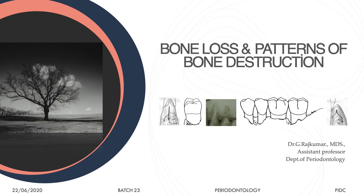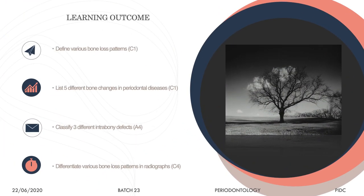Dear students, today's class is on bone loss and patterns of bone destruction. We have already seen periodontal disease, how the periodontal pocket forms and how periodontitis progresses. Today we will see how bone loss occurs and what are the patterns of bone destruction.